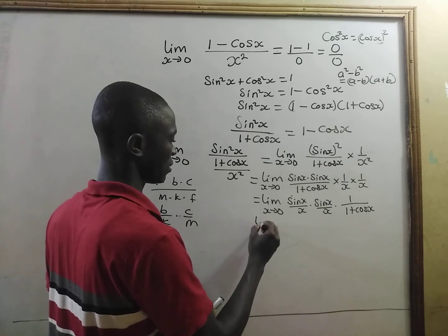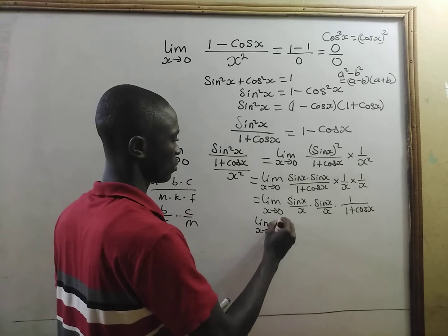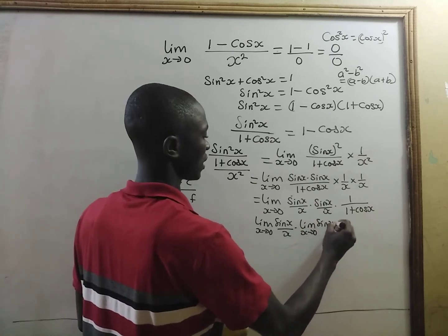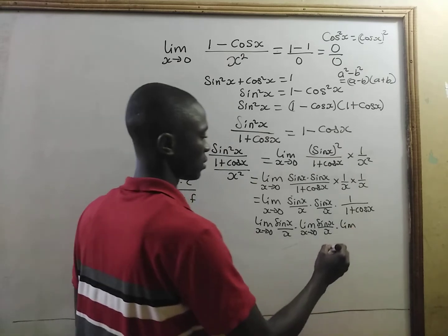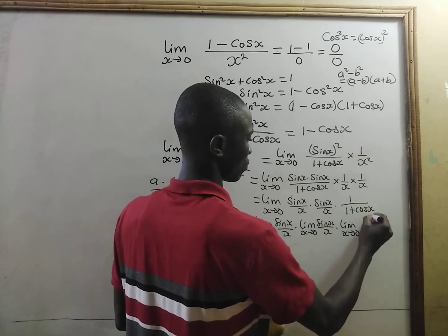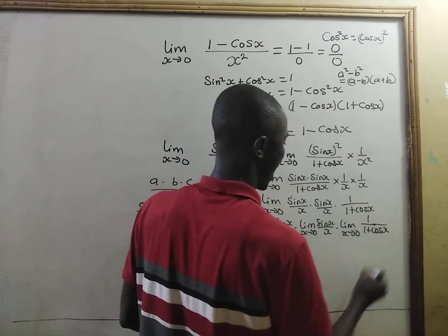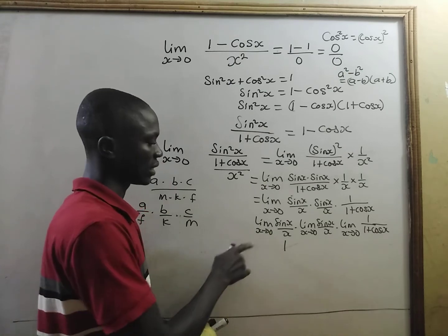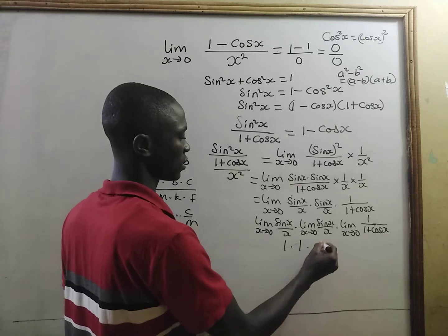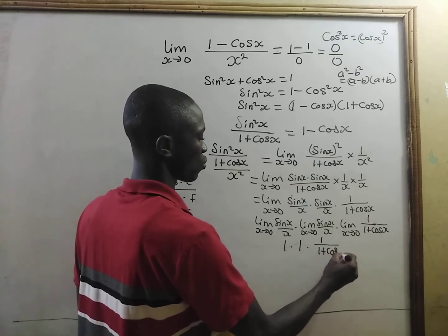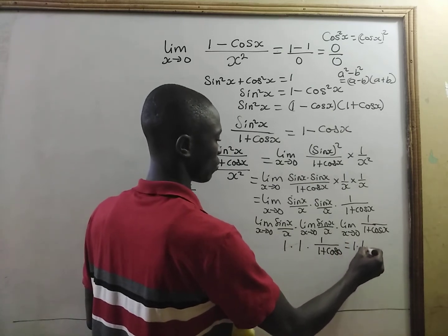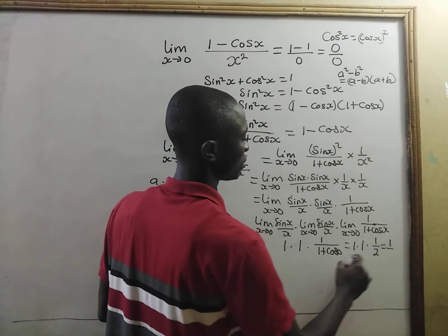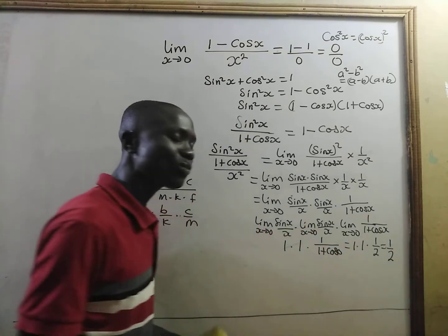Now, this will give us the limit. We are going to use the product rule. The limit as x approaches zero of sine x on x, times the limit as x approaches zero of sine x on x, times the limit as x approaches zero of 1 on 1 plus cosine of x. This is standard — the limit of sine x on x as x approaches zero is 1. So we get 1 times 1 times 1 divided by 1 plus cosine of 0, which is 1 times 1 times 1 on 2. That gives us 1/2.